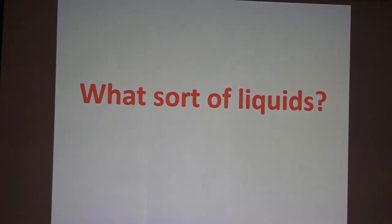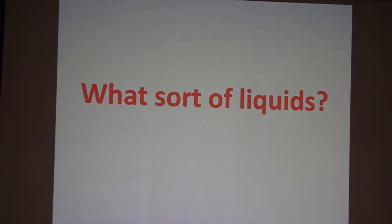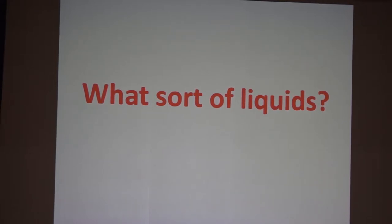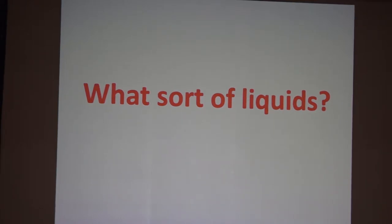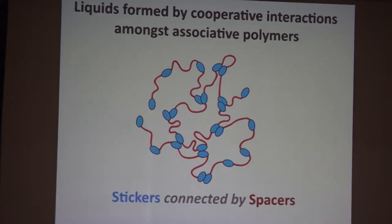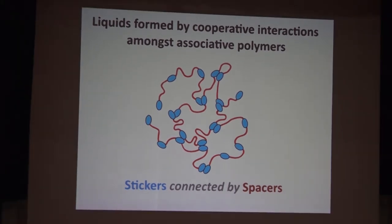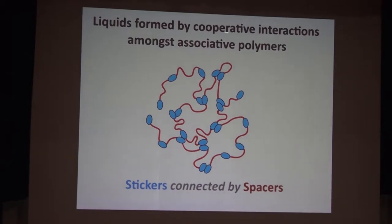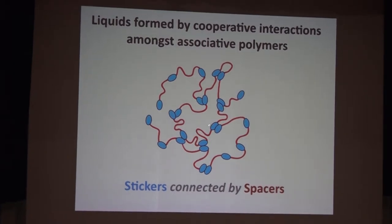These are membrane-less bodies. As Richard pointed out, they're quite prevalent in RNA processing, and these liquid-like bodies are thought to encompass multiple proteins in RNA. From a physics perspective, the question I'd like to ask is: what sort of liquids are these? Are we talking about simple liquids like water, or something quite different? I'll tell you right off the bat that these are quite different — they're polymeric liquids.